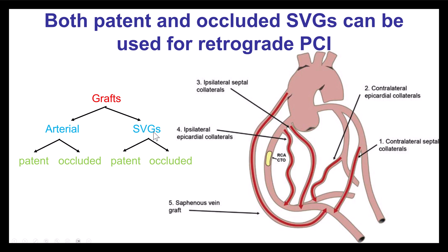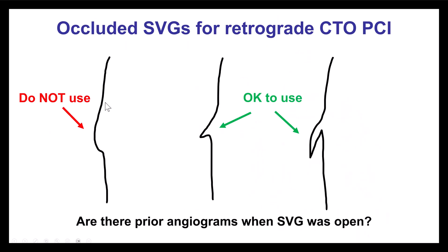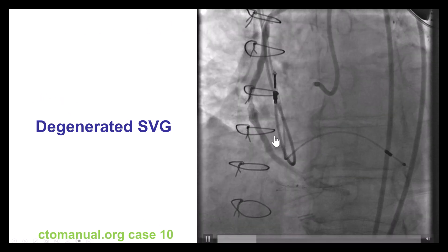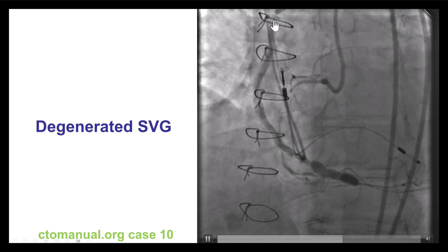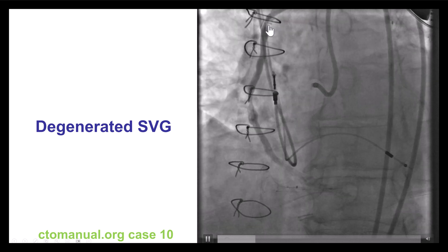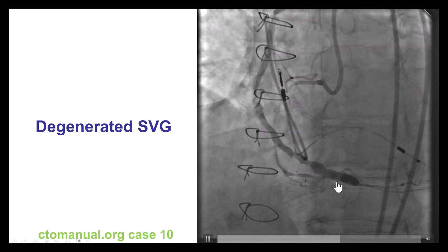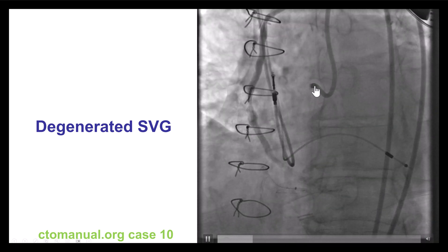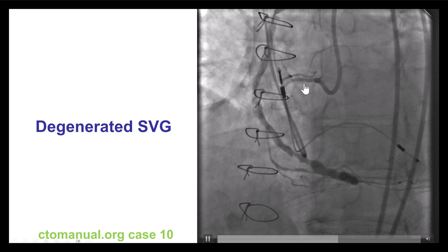The vein grafts can be used whether they are patent or occluded, with some exceptions. Specifically, if there is a blunt stump, this is not safe to puncture because the risk of perforation increases. But if we have a nice entry into the occluded saphenous vein graft, one can try retrograde through it. Having previous angiograms when the vein graft was open can help clarify the course of the vein graft and its touchdown into the native vessel. If the SVG is open, one may ask why bother doing the native CTO — the answer is that vein grafts are often diffusely degenerated or tend to have recurrent failure, so recanalizing the native vessel provides better long-term patency.